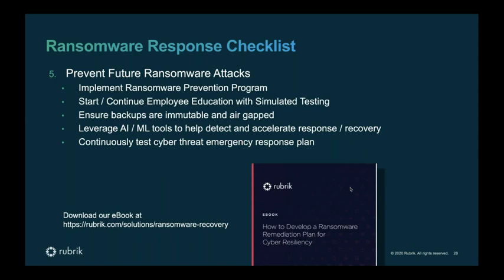You always want to prevent this before it happens. You need a prevention attack plan — something to do before the attack, but if you're doing this after, prepare one for the next time. Implement a prevention program starting with great employee education. You have to simulate testing — a plan on paper is no good if you're not drilling it. Make sure you have backups that are immutable and air-gapped. Leverage artificial intelligence and machine learning to help detect and accelerate your response, and continuously exercise this plan. Rubrik's framework kit is available for download on our website.